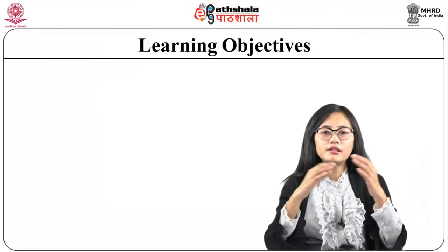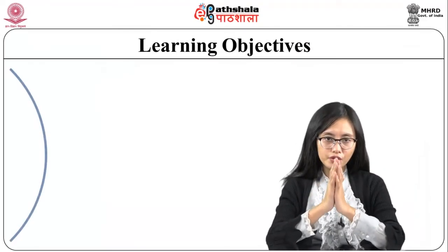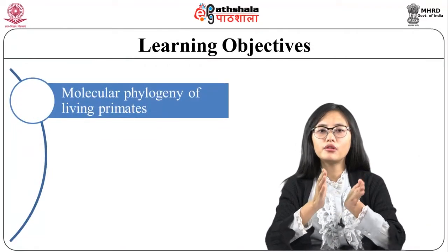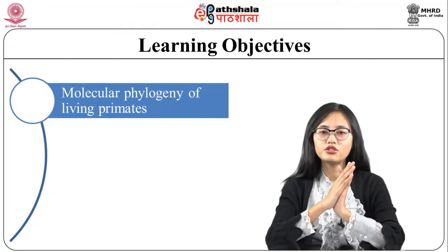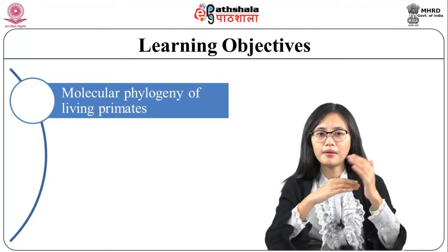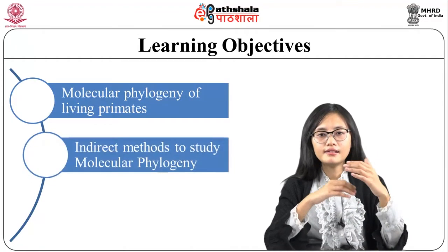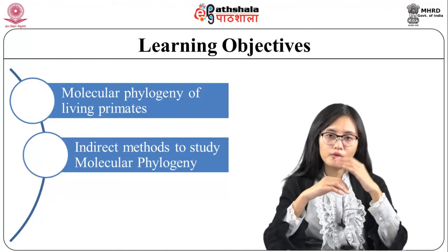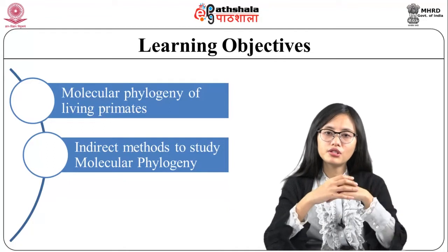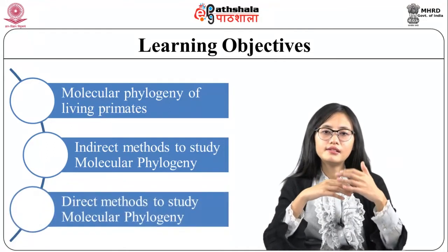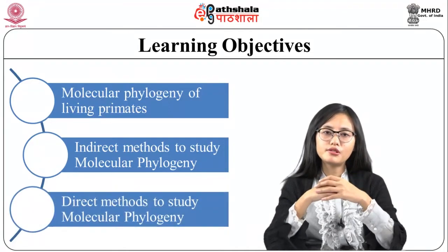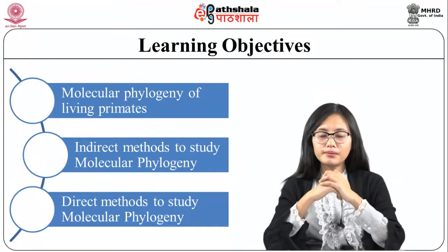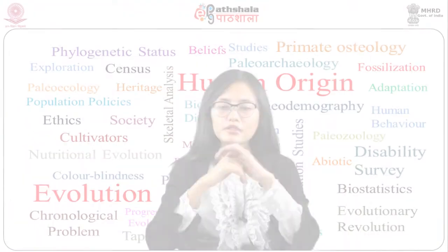The learning objectives of the module are to understand the molecular phylogeny of living primates, to understand the indirect methods to study molecular phylogeny, and to understand the direct methods to study molecular phylogeny.